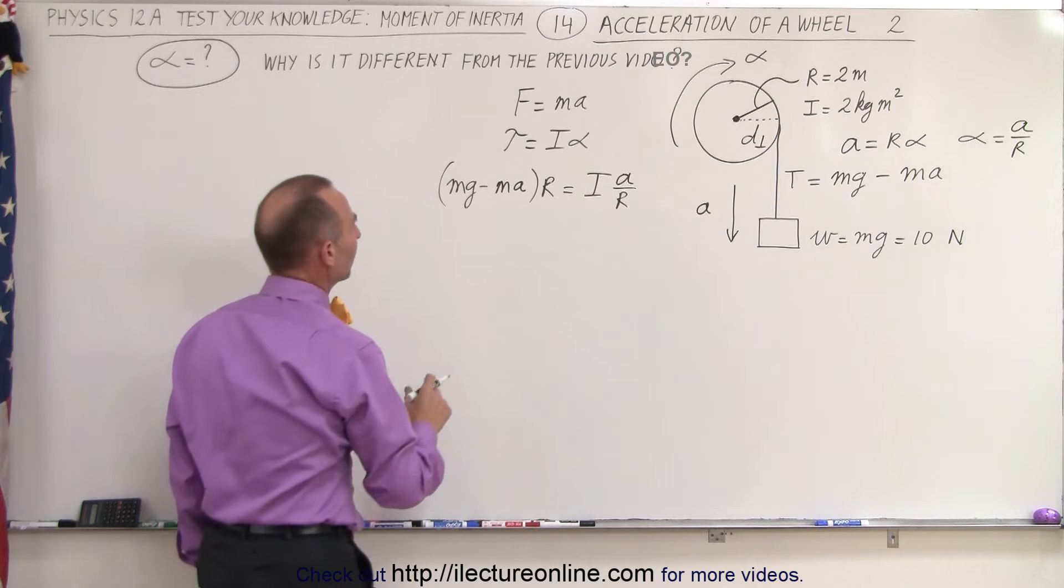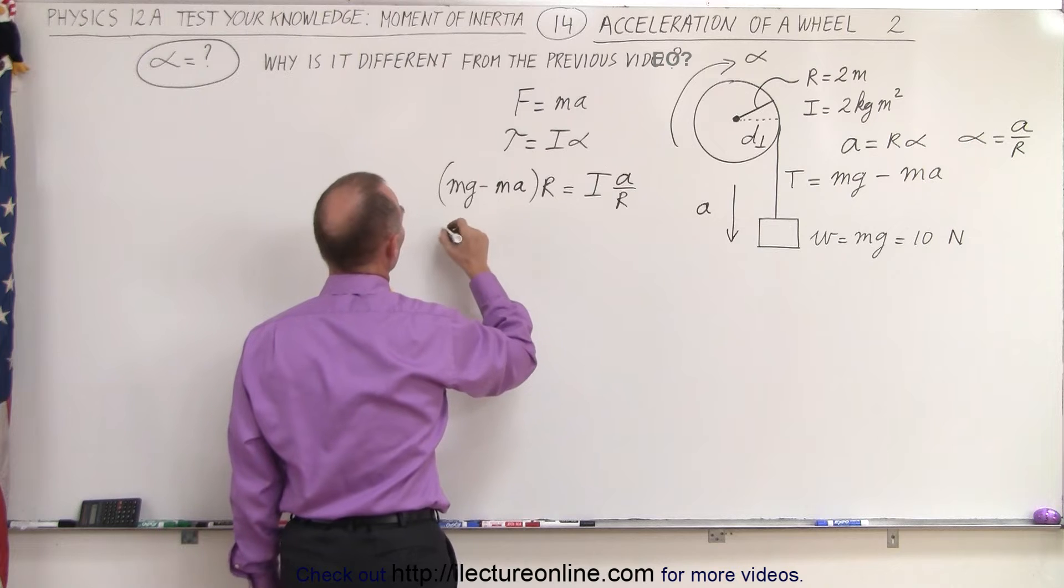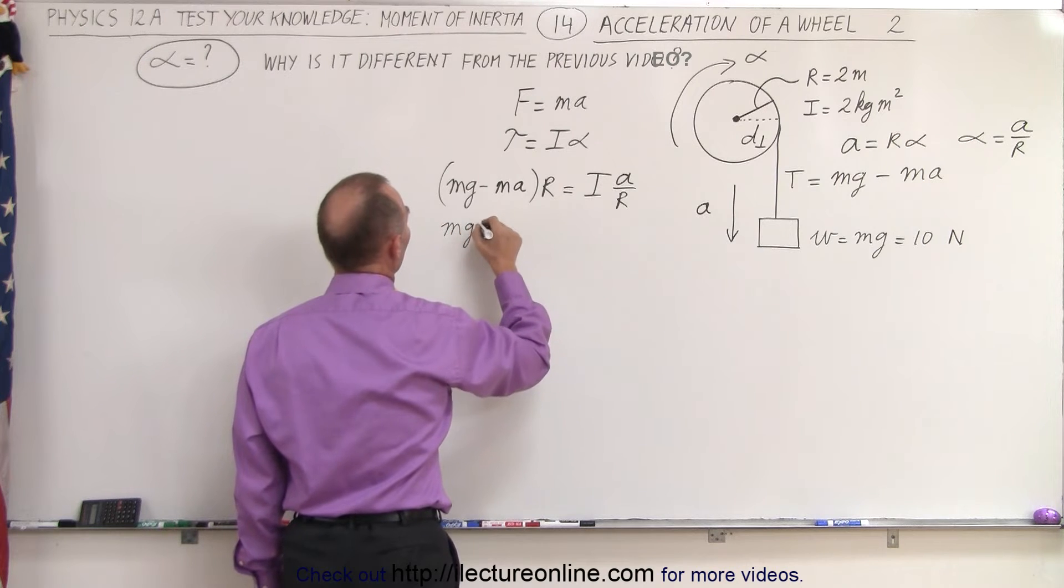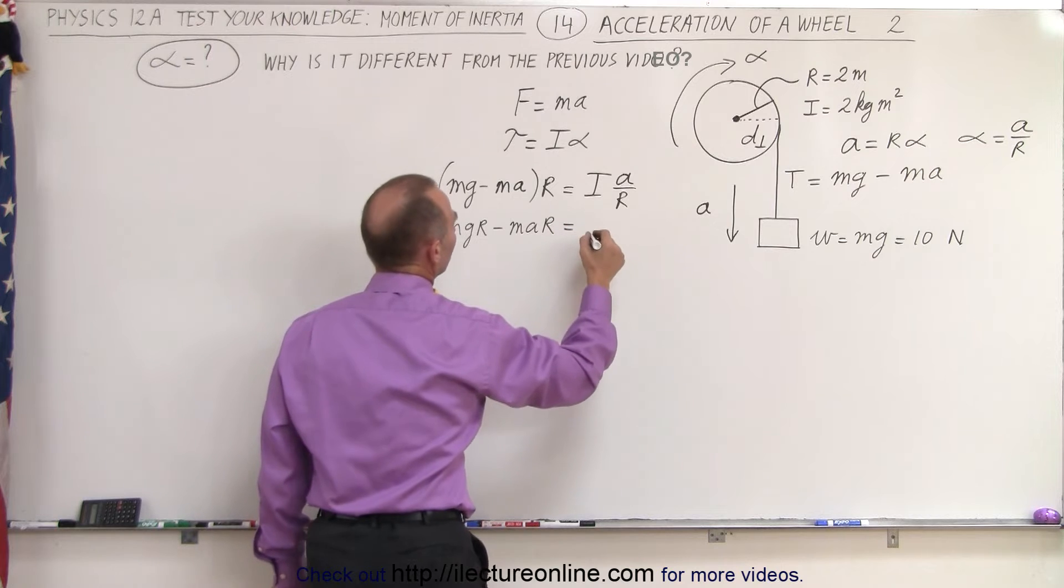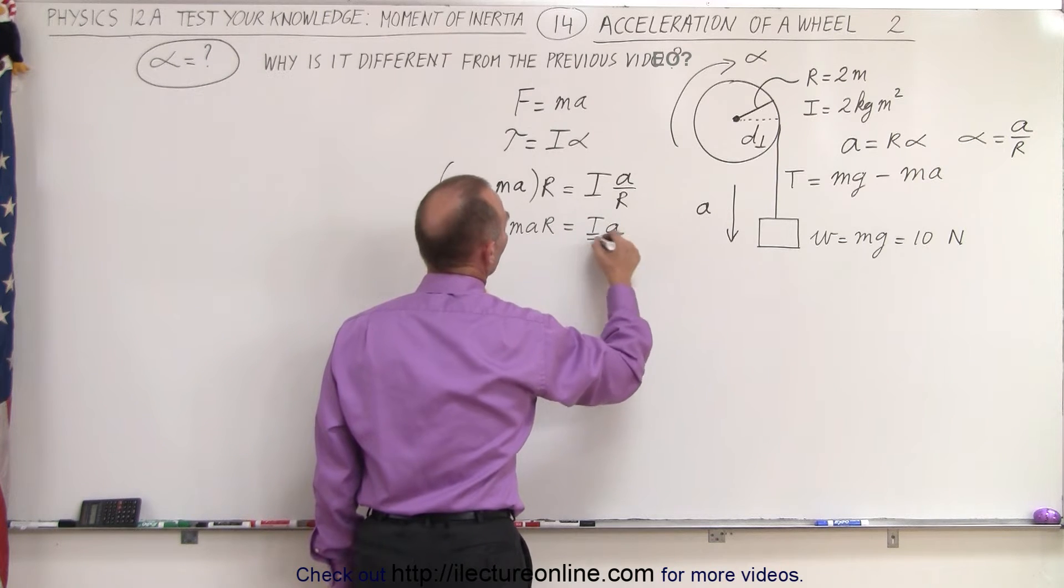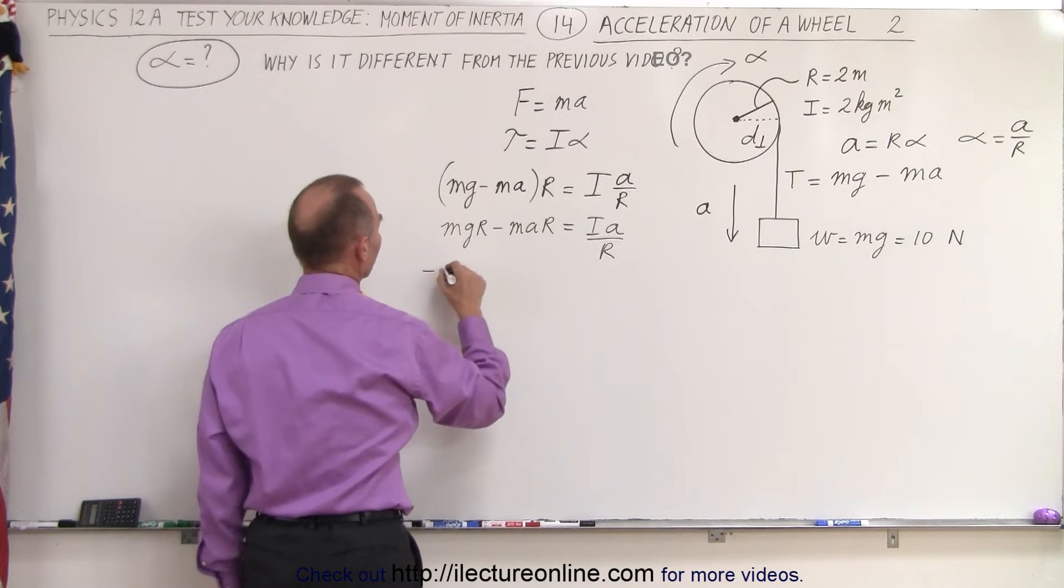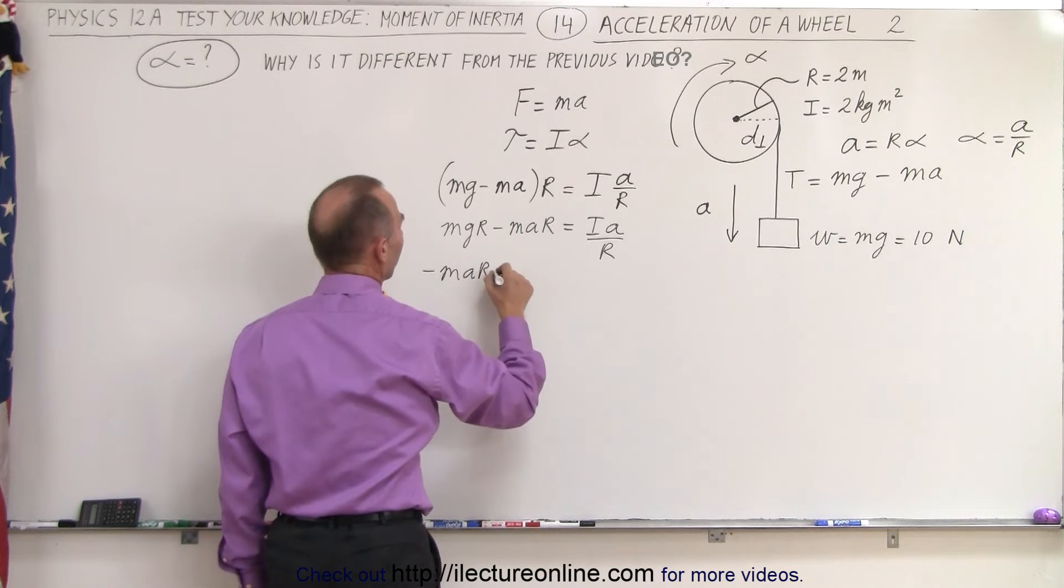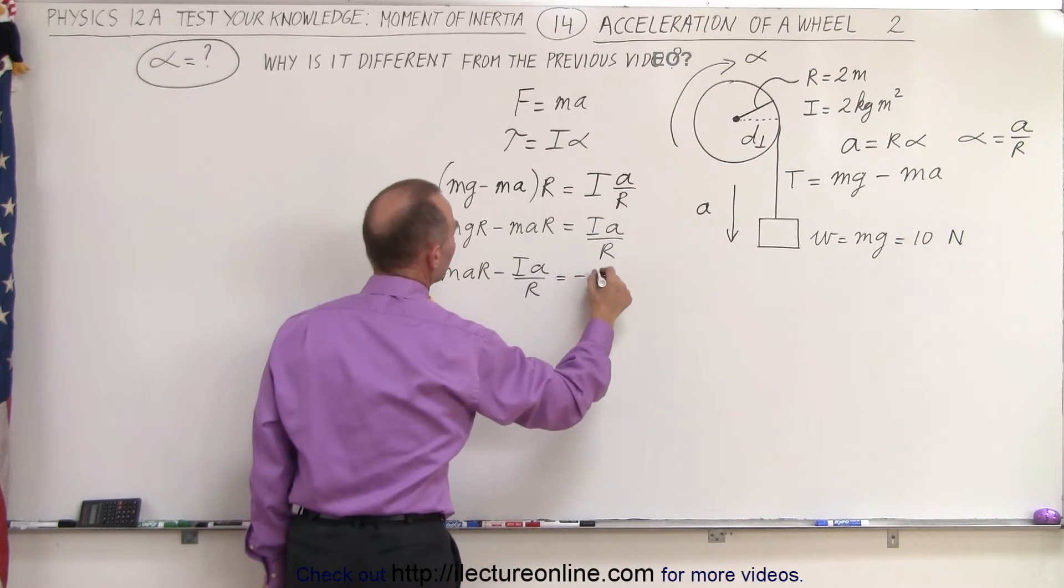Okay, so I'm going to need everything with an A on one side and everything else on the other side. So this becomes MgR minus MAR equals IA over R. So this goes to the left, that goes to the right, so I have minus MAR minus IA over R equals MgR.